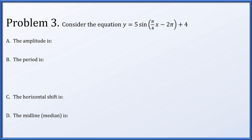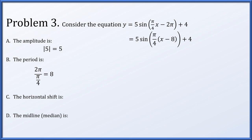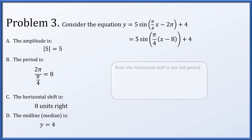For problem three, consider the equation y equals 5 times the sine of pi over 4 times x minus 2 pi plus 4. If we factor the pi over 4 out from the quantity inside the sine function, what's left behind is x minus 8. So the amplitude is 5, the period is 2 pi divided by pi over 4, which equals 8, the horizontal shift is 8 units to the right, and the median is y equals 4.